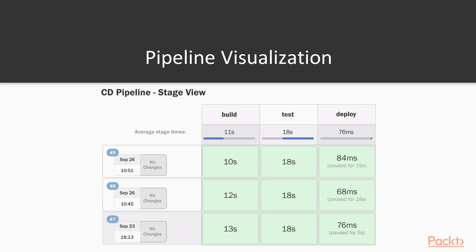This is an example of stage view for a simple CD pipeline. This gives a high-level view of the process, and it is particularly useful for explaining to non-technical people what the pipeline is doing, at which stage it is, or where it broke.